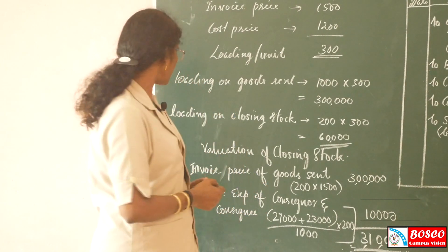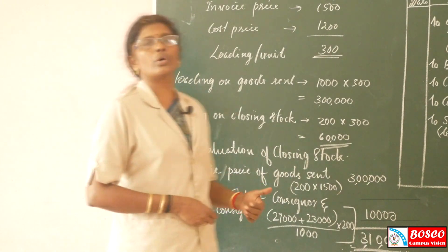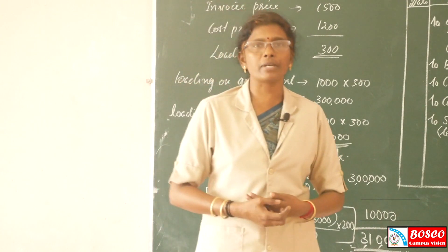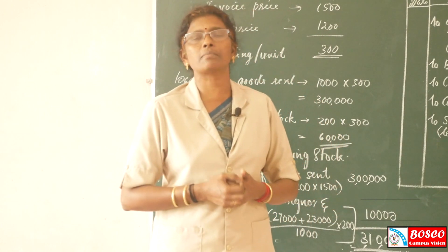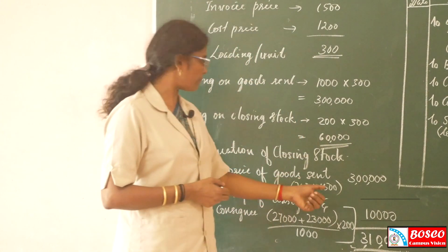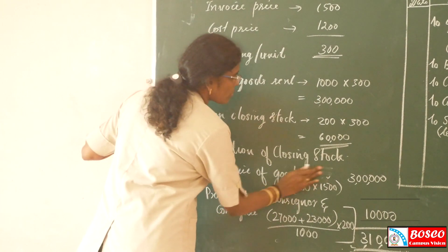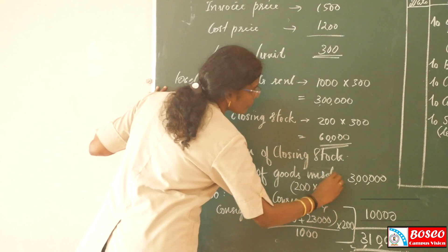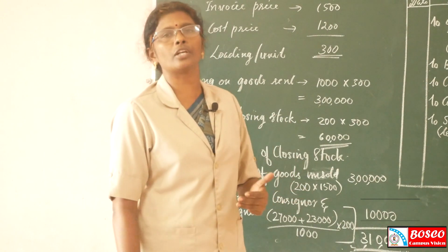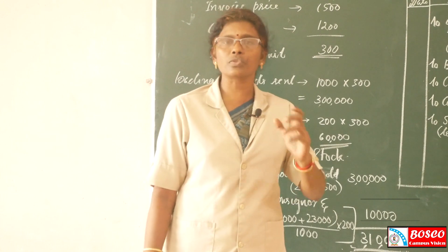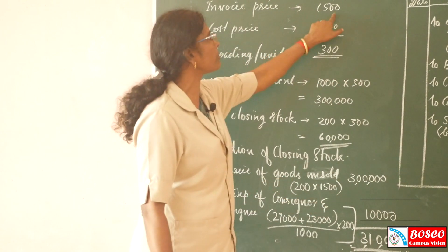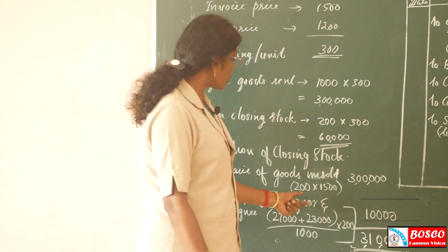Valuation of closing stock — we use the unsold invoice price method. In this question we know both the invoice price and the cost price. For valuation of closing stock, we always use the invoice price. Invoice price of unsold goods: 200 units into Rs.1500 per unit.